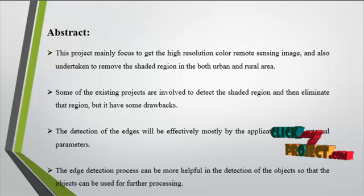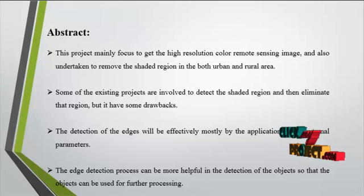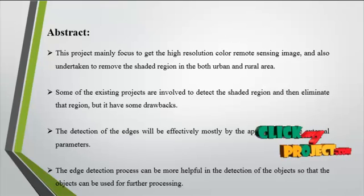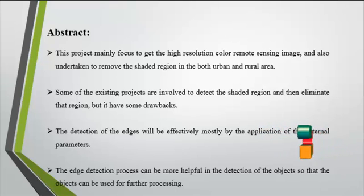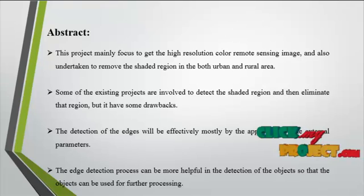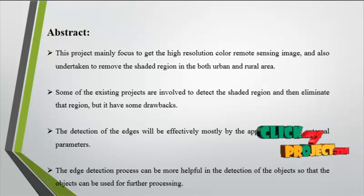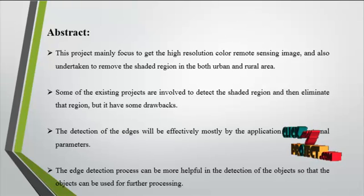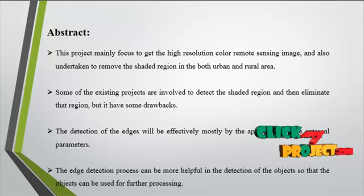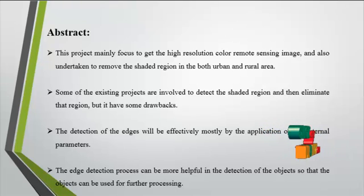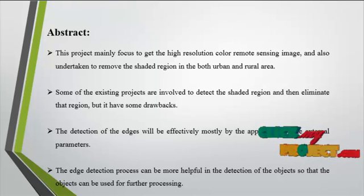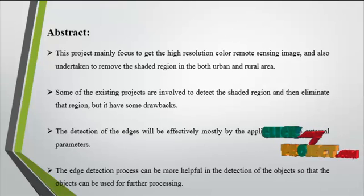Now we discuss the abstract. In accordance with the characteristics of Urban High Resolution Color Remote Sensing Images, we put forward an object oriented shadow detection and removal method. In this method, shadow features are taken into consideration during the image segmentation. Then, according to features of the images, suspected shadows are extracted. Furthermore, dark objects which could be mistaken for shadows are ruled out according to the object properties and spatial relationship between the objects.